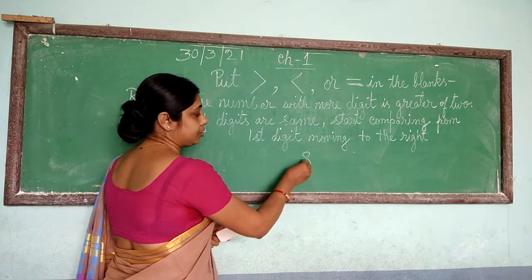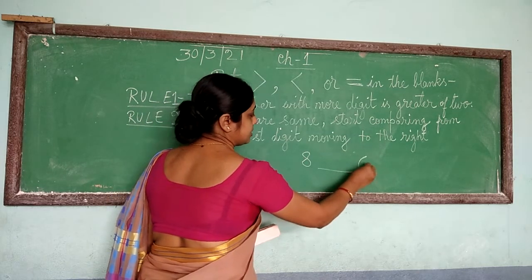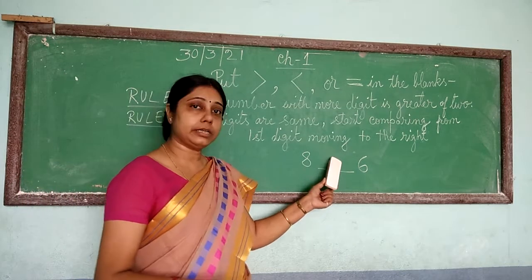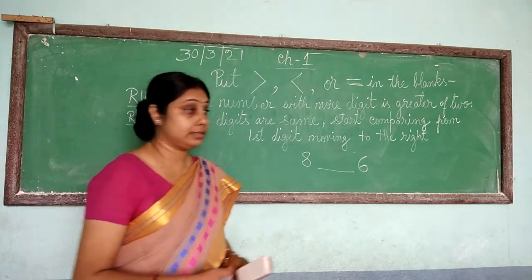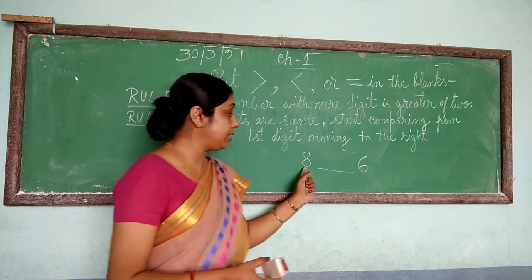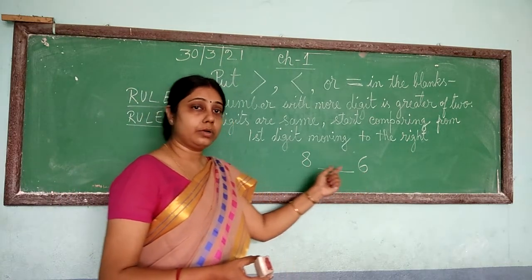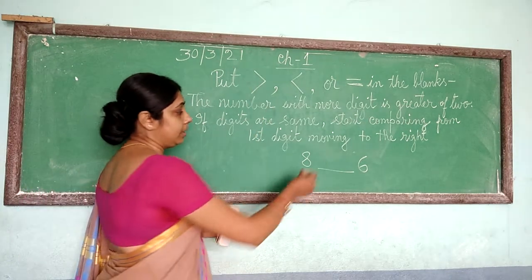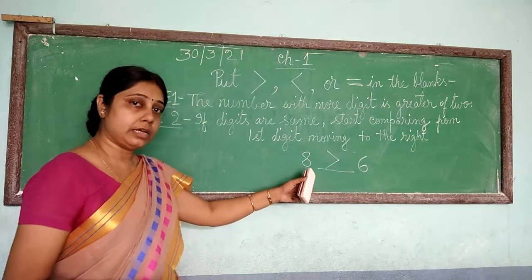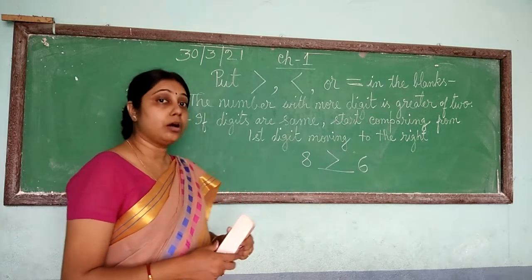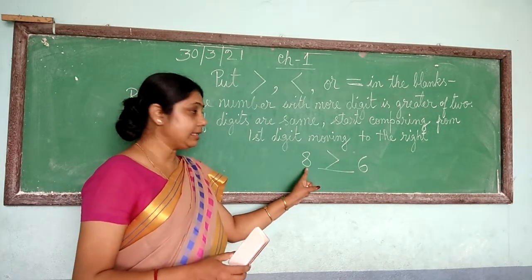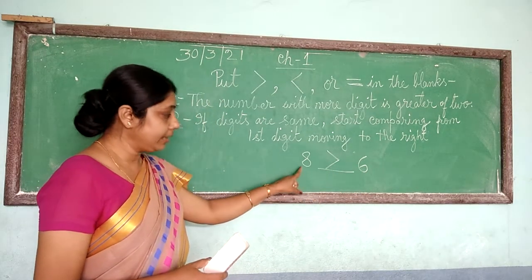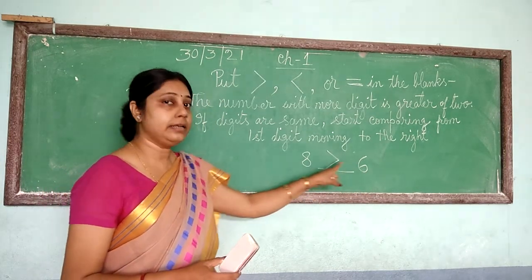Now suppose I am giving you a digit: 8 blank 6. I am asking you to put the sign. What are you going to put here? 8 is bigger than 6, so 8 is greater. So we are going to put the greater than sign. Now if I ask what is written, you should say: 8 is greater than 6.